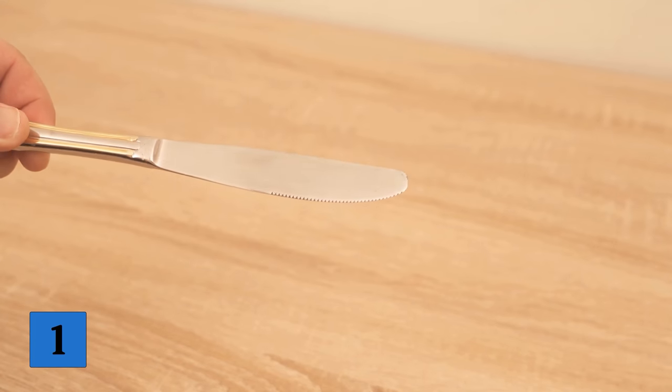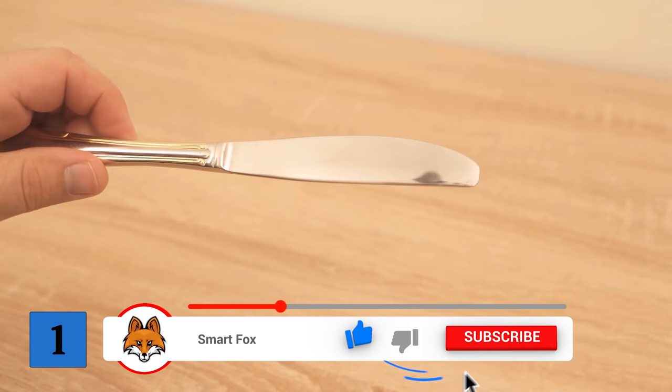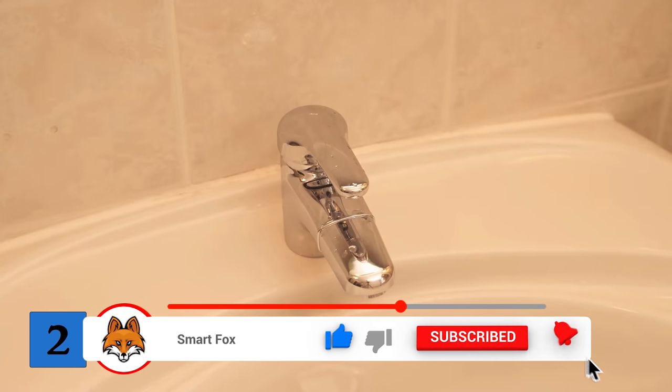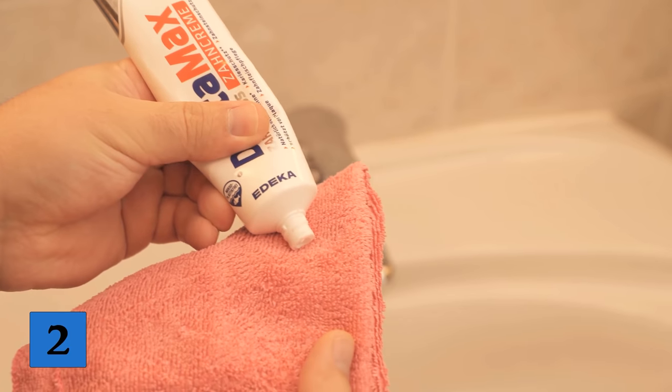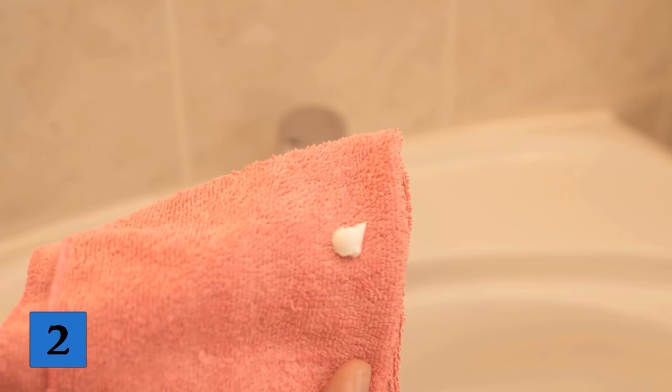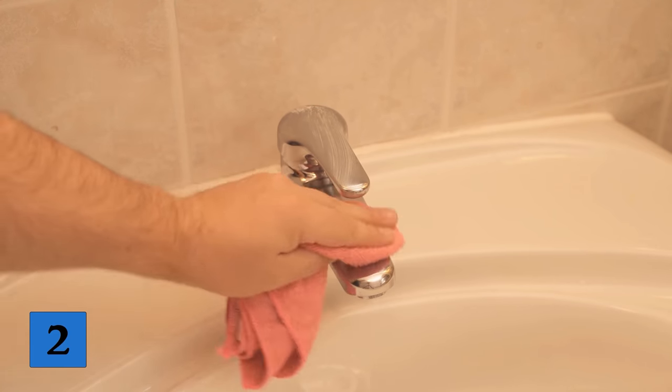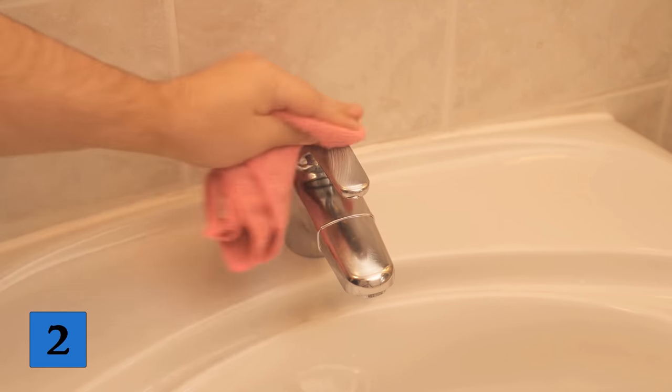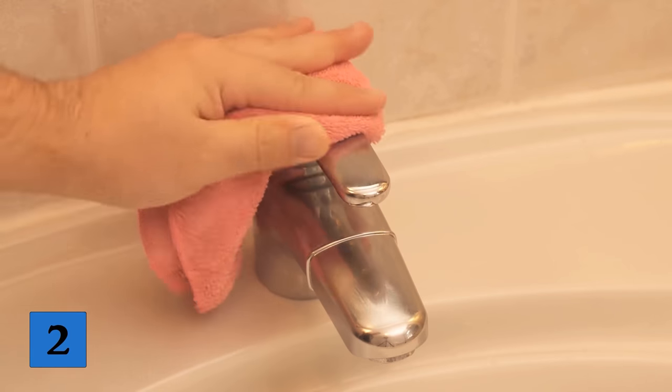Then we come to our second cleaning trick with toothpaste. Because what you can now also use it to shine again are the faucets in the bathroom or even in the kitchen. Again we put some toothpaste on a cloth and then start polishing the faucet. Here you can see with time that the toothpaste becomes less and less. And so we want to continue until everything is really nicely polished.